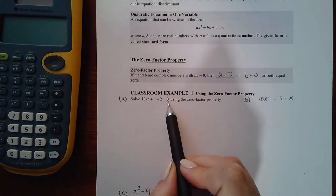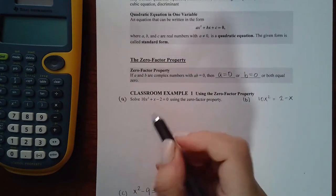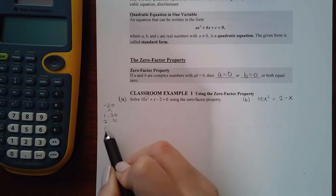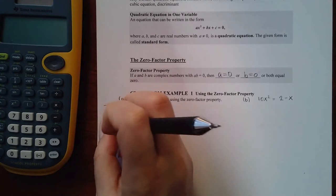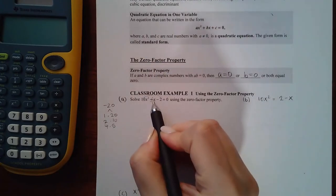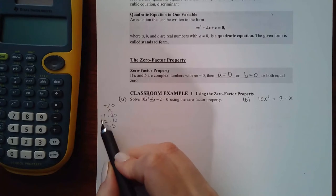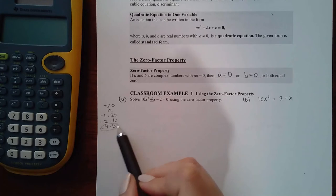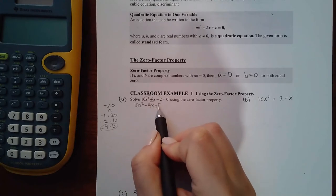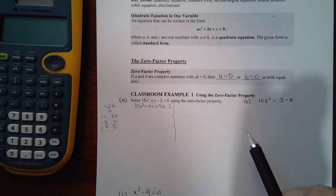When we get problems like this, we have to make sure that it's in descending order and equal to zero, and then from there you just factor it and set each factor equal to zero. So here, let's see, we get negative 20, so we get 1 and 20, 2 and 10, 4 and 5. The middle guy is positive 1, actually, so the big guys have to be positive, but because the product needs to be negative, that means these smaller numbers will be negative. This is the combination that's going to give me a positive 1. So I get 10x² minus 4x plus 5x minus 2.